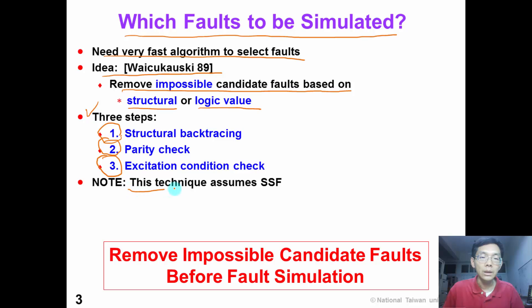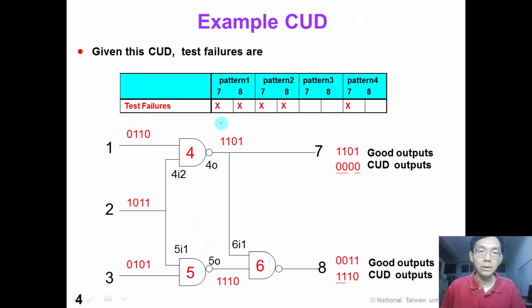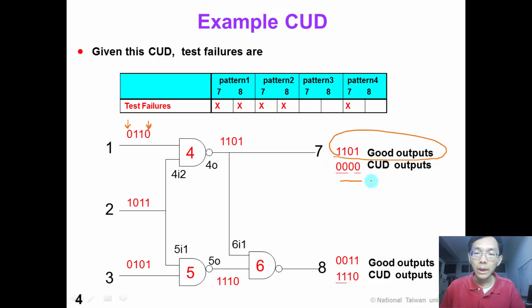Please note that this technique assumes only one single stuck-at fault in the circuit under diagnosis. We apply four test patterns to test this circuit. The first column is the first test pattern and the last column is the fourth test pattern. This circuit has two outputs. The first line shows the good output value and the second line shows the defective CUT output values. The failing outputs are underlined, and we can summarize the test failures in this table.